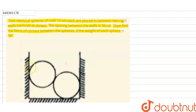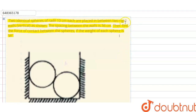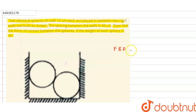The weight of each sphere is w, and we have to find the force of contact between the spheres. Now let us draw the free body diagram for each sphere separately. The free body diagram of sphere A: